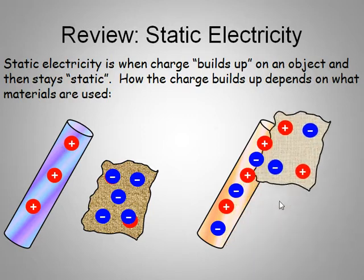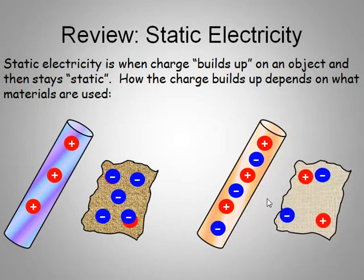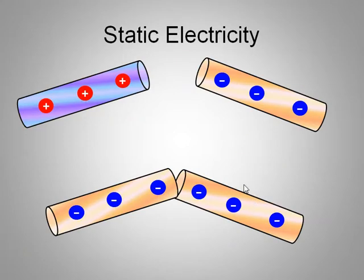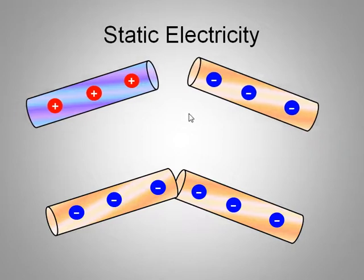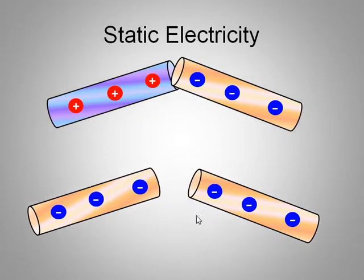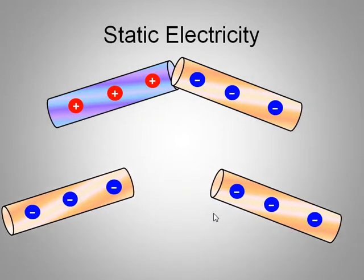Here on this one, we're going to rub it — these are different materials and the electrons would rather be on the tube rather than on the cloth. We remember that unlike or dissimilar charges attract, and like charges repel.